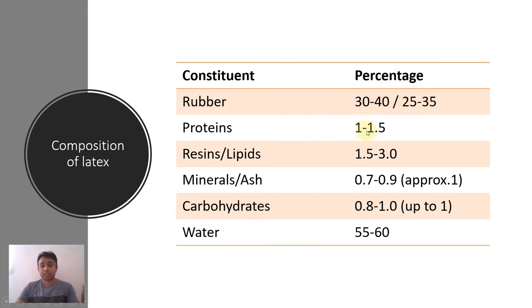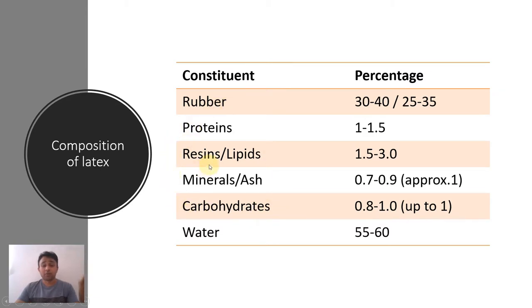Protein content is around 1 to 1.5 percent. There is a small amount of ash, around one percent of carbohydrates, and lipid content is about three percent. These are the rubber constituents and non-rubber constituents. Today we will discuss the properties of rubber and the effects of these non-rubbers on rubber properties.